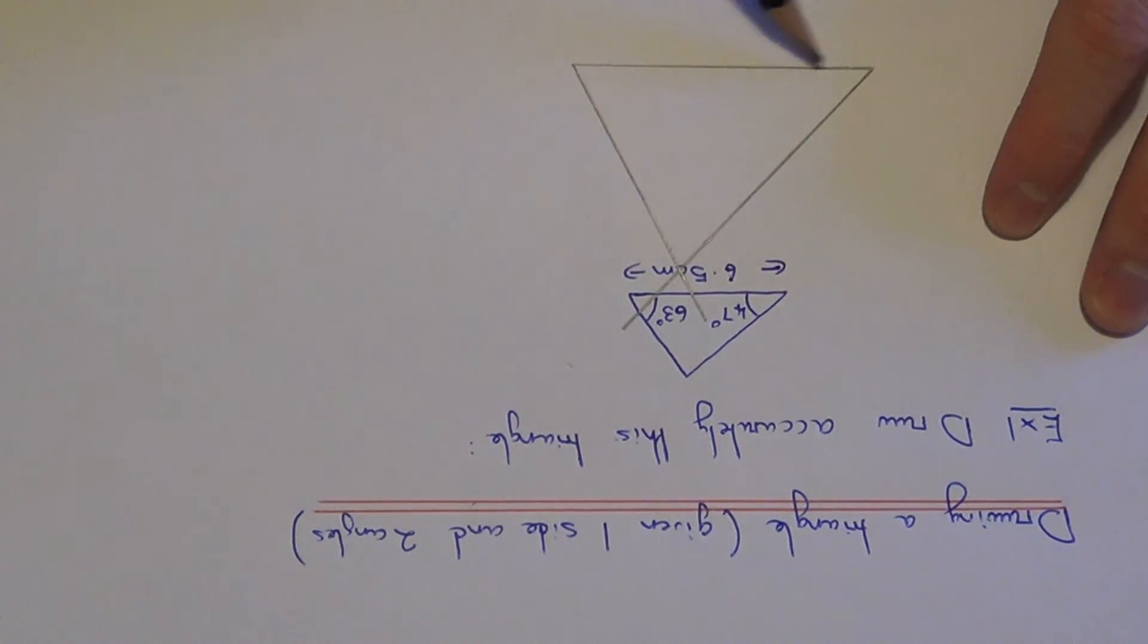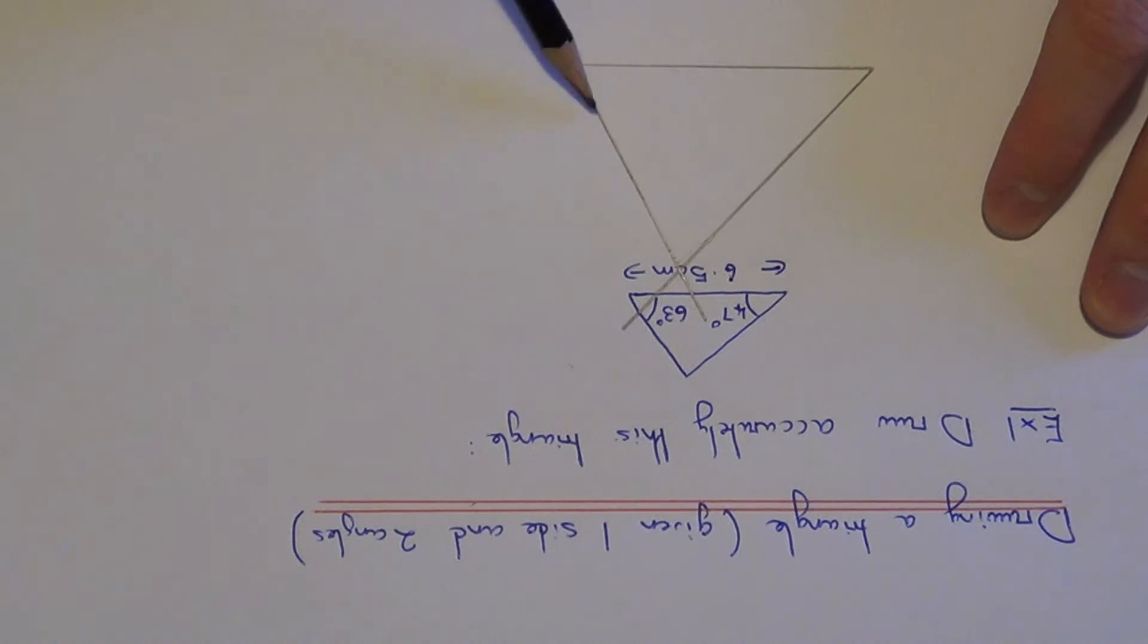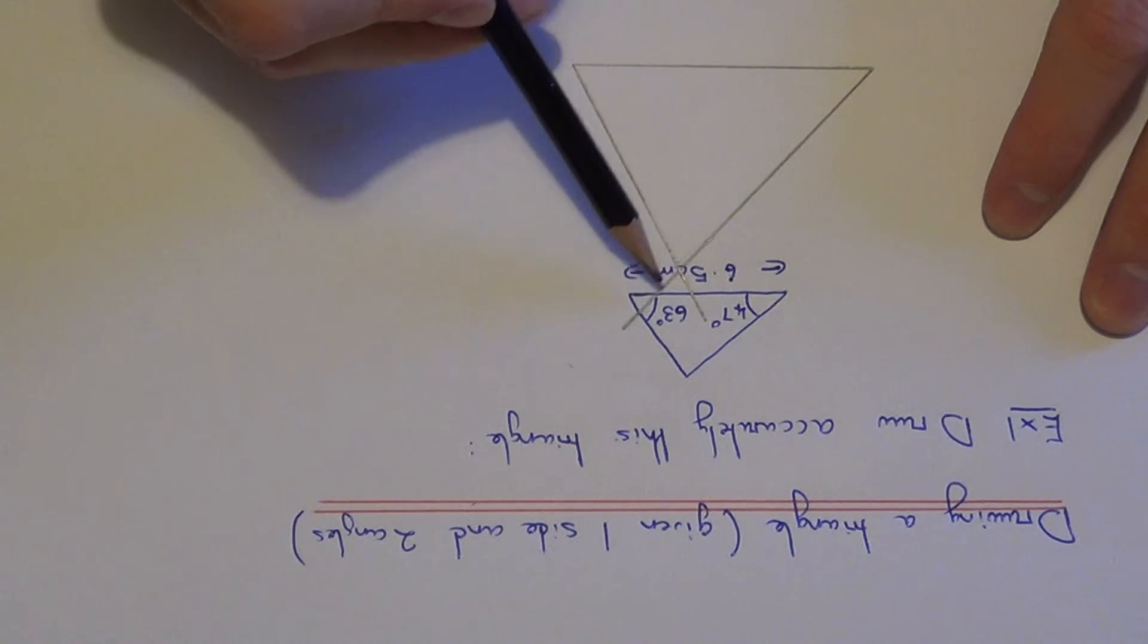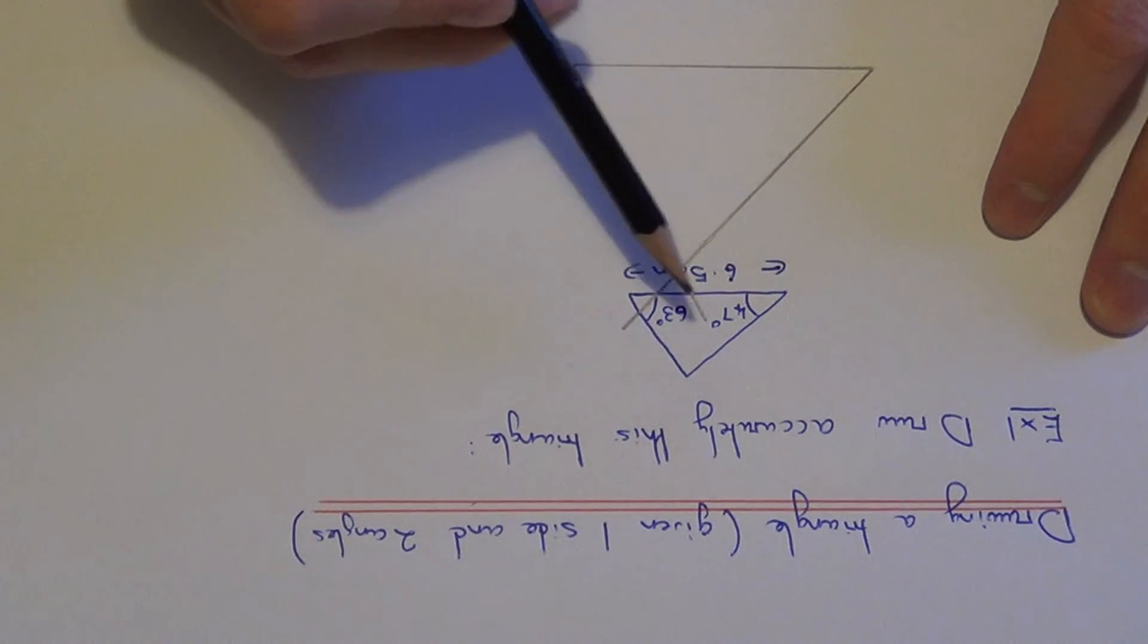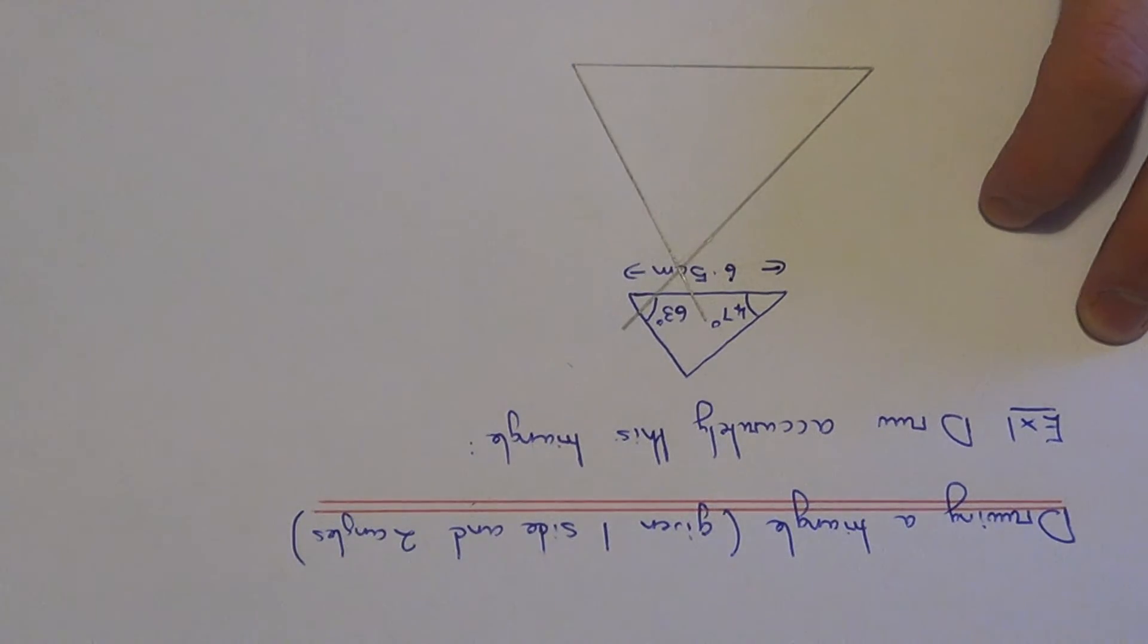So that is our triangle drawn accurately. We have these two lines which are a little bit longer. You can leave these in because they show the method in which we have drawn it.